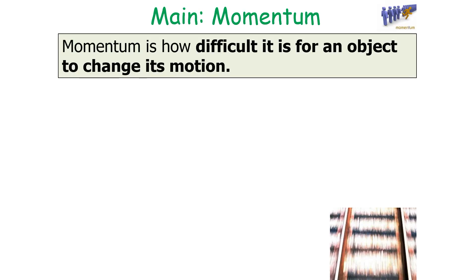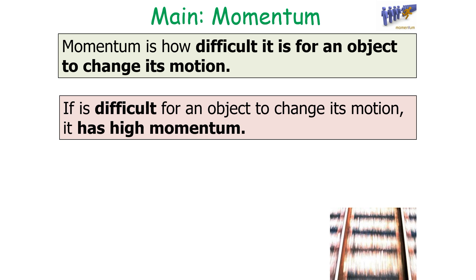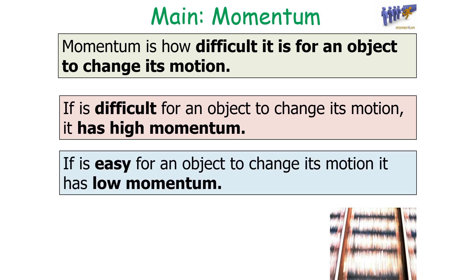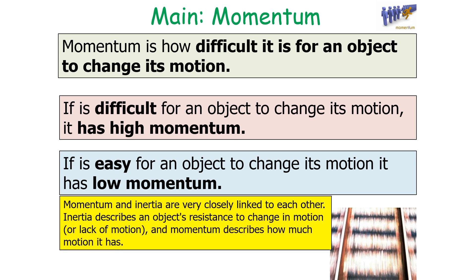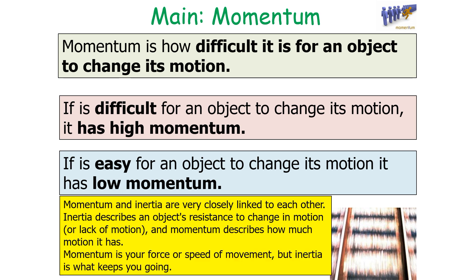Momentum is how difficult it is for an object to change its motion. If it is difficult for an object to change its motion it has a high momentum; if it's easy, it has a low momentum. This means that momentum and inertia are very closely linked. Inertia describes an object's resistance to change in motion, whilst momentum describes how much motion it has — momentum is your speed of movement whilst inertia is what keeps you going.